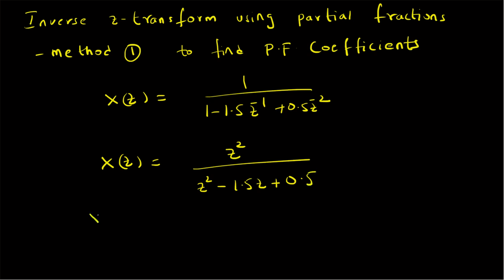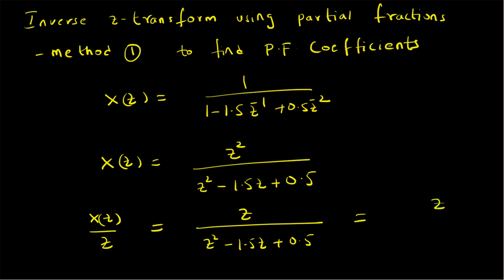Now we find X(z)/z, which equals z / (z² - 1.5z + 0.5). We can decompose the denominator as a product of two factors. The sum of the roots is -1.5 and the product is +0.5, so the denominator factors as (z - 1)(z - 0.5), giving X(z)/z = z / [(z - 1)(z - 0.5)].